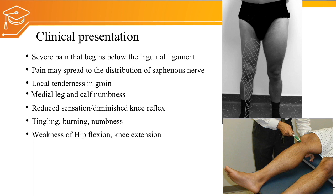Weakness of the hip flexors — psoas major and iliacus — occurs if the level of injury is above the hip joint or pelvis. Knee extension weakness is mostly involved in femoral nerve injury, regardless of whether the level is at the shaft of the femur, the hip joint, or above.